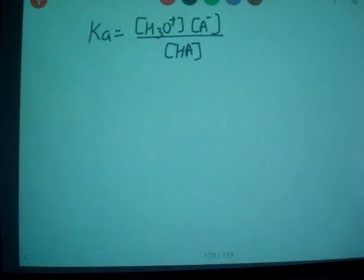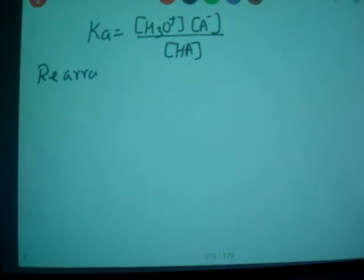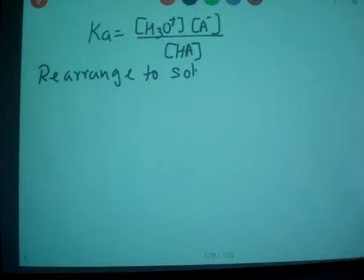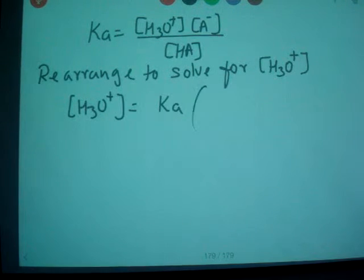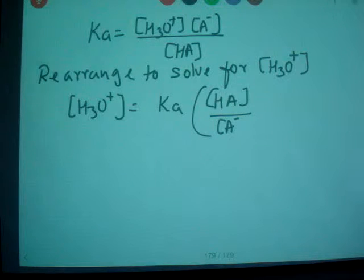When we solve for H3O plus, we can rearrange to solve for H3O plus ion concentration. When we rearrange, H3O plus is Ka times HA concentration divided by A minus concentration.